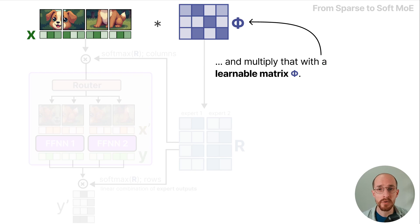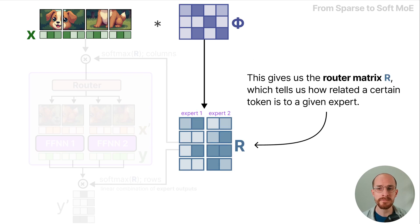This gives us the routing matrix R which tells us how related a certain token is to a given expert.